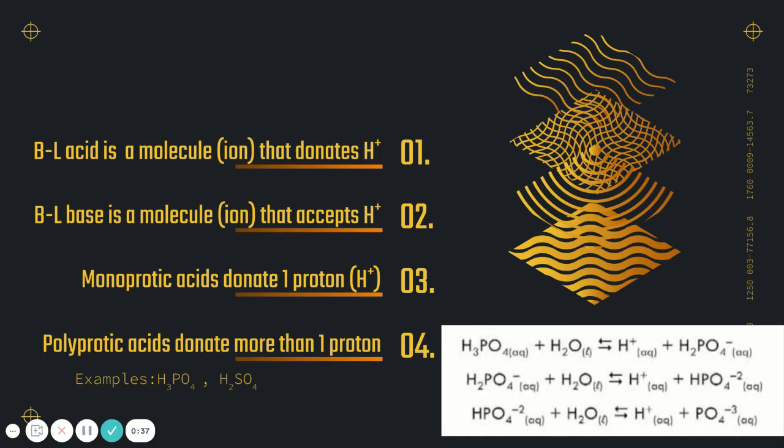So a Bronsted and Lowry acid is defined as a molecule that's going to donate an H+. You can see that in this example right here. Here we have the H3PO4 and it gave up the H+. So the H+ became separate and now we have H2PO4-. So here that H3PO4 would be acting as a Bronsted and Lowry acid.